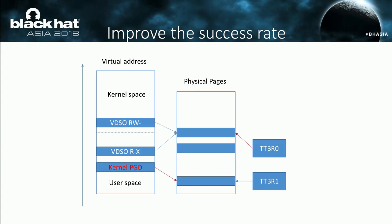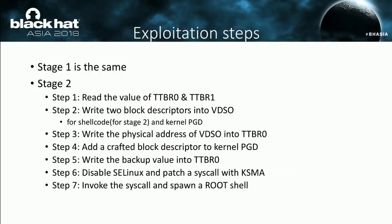To avoid kernel crashes, modifying the TTBR0 register is another choice. The main idea of the improved approach is to map the physical page of the kernel PGD into this root process and add a crafted block descriptor to the PGD. After testing, the success rate is 100%. After modifying the TTBR0 register, the kernel PGD is mapped into user space. Here are the improved exploitation steps: stage 1 is the same as before. At stage 2, first read the values of TTBR0 and TTBR1 registers, then craft and write two block descriptors into the VDSO page — one for the kernel PGD and one for the shellcode — then write the physical address of the VDSO page into TTBR0. Now the kernel PGD is mapped into user space. Add a crafted block descriptor to the kernel PGD and write the backup value into TTBR0 register. Finally, disable SELinux, patch a syscall with KSMA, invoke the patched syscall, and spawn a root shell.